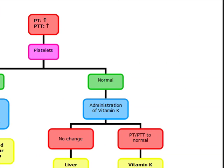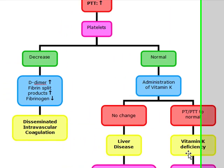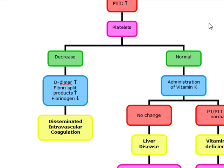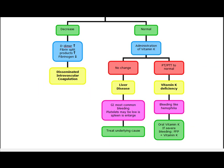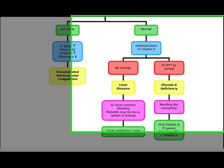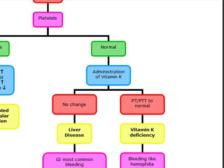Now, if you have an increase in your PT and an increase in your PTT but your platelet count is normal, it's going to be one of two things: either liver disease or vitamin K deficiency. You're going to administer vitamin K. If there's no change after administration of vitamin K, you know there's going to be some type of severe liver disease, because your vitamin K-dependent factors are normally produced in the liver. The only clotting factors not made in the liver are factor VIII and von Willebrand's factor. So if you administer vitamin K and still have an increase in PT and PTT, it's going to be liver disease.